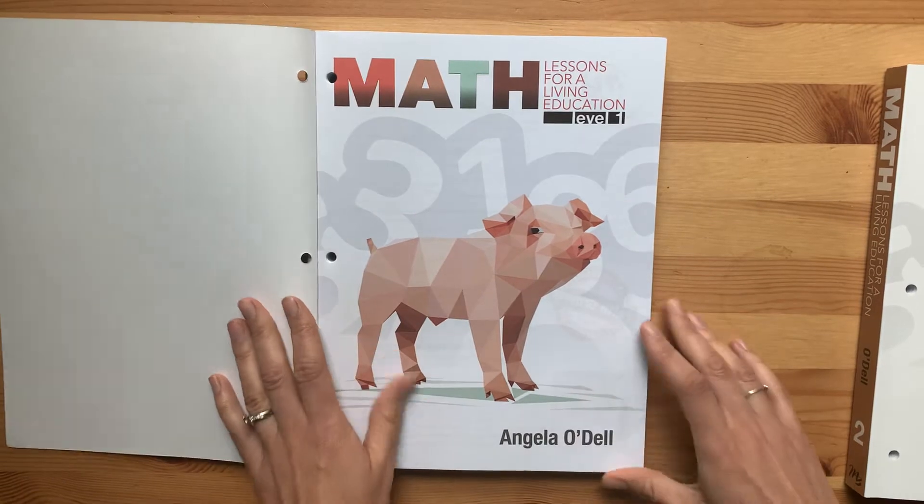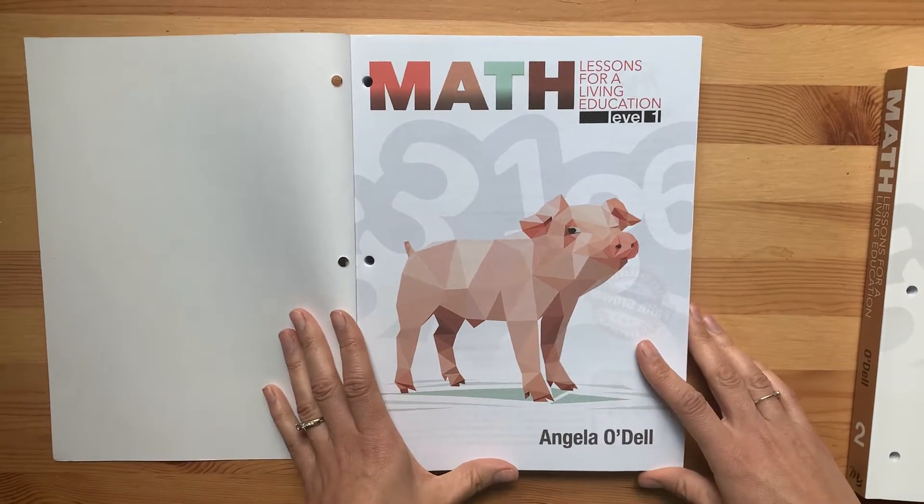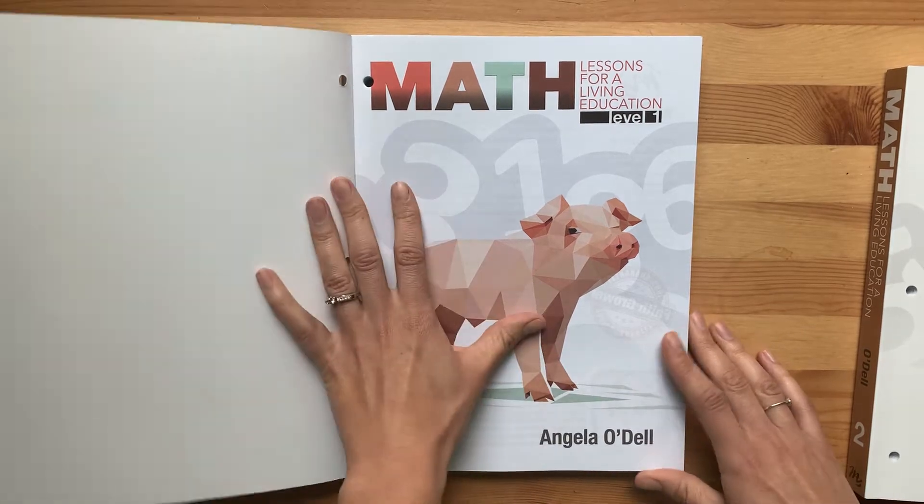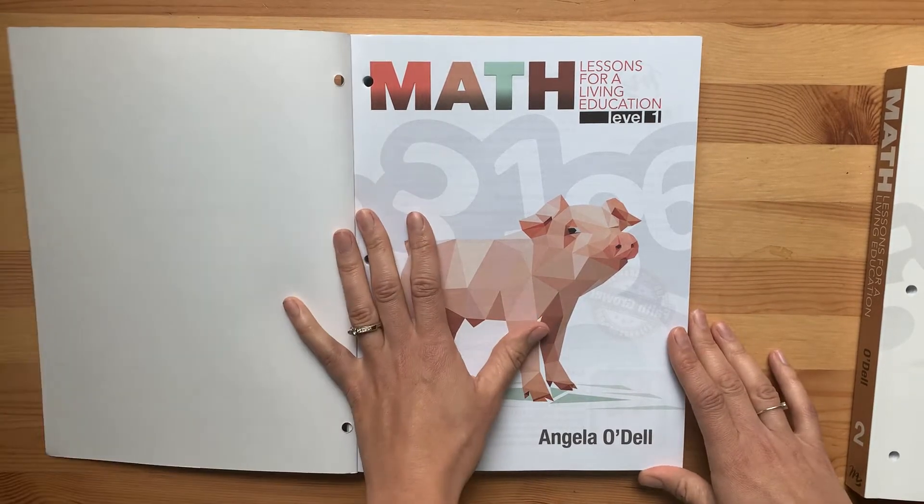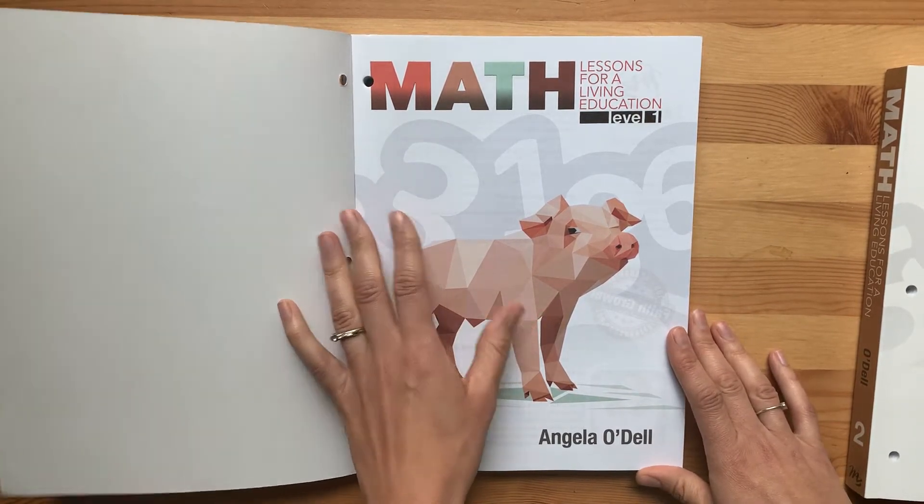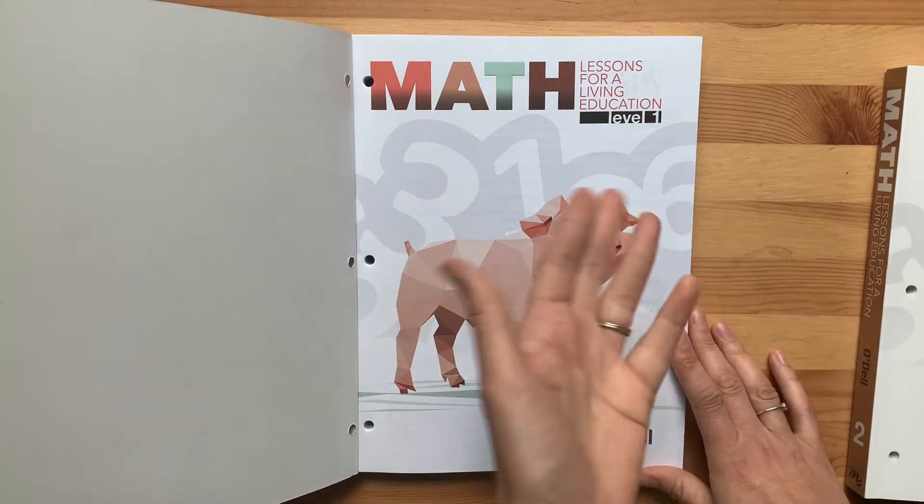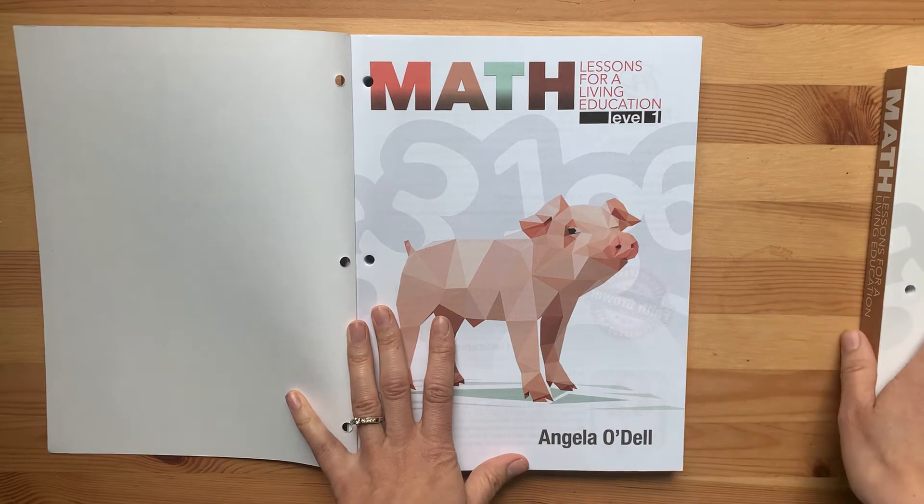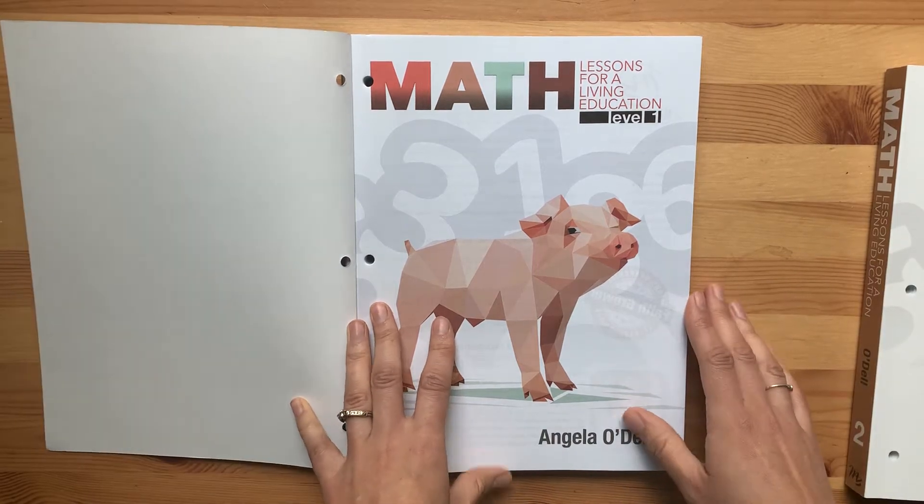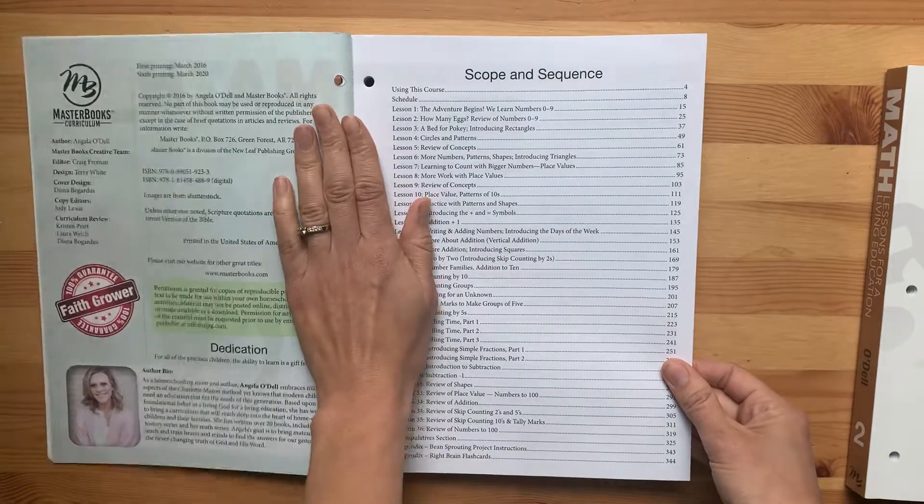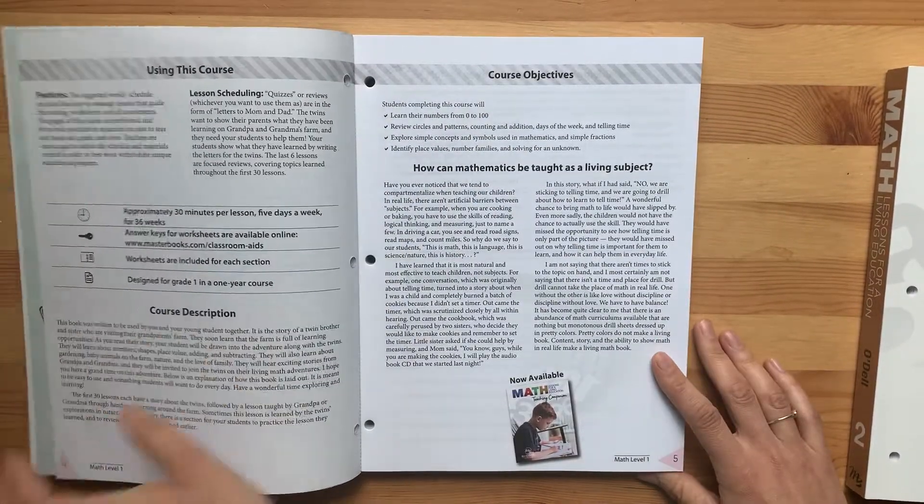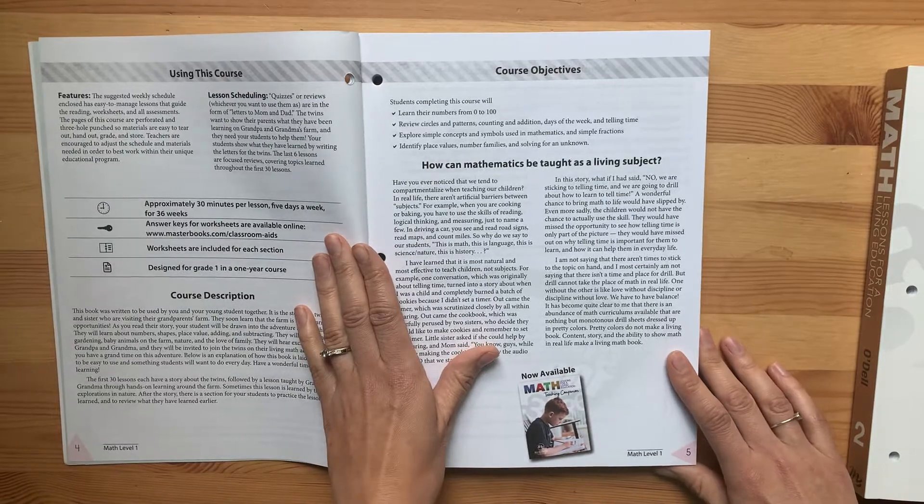Maybe you have a first grader who is new to some of these concepts, then you would just need to probably start here. Or you could use it as a quick review going pretty fast if they already know a lot of these concepts and then slide into Book 2 sometime during the middle of the year. The lessons are a little bit shorter here. Masterbooks also has a placement test as well.